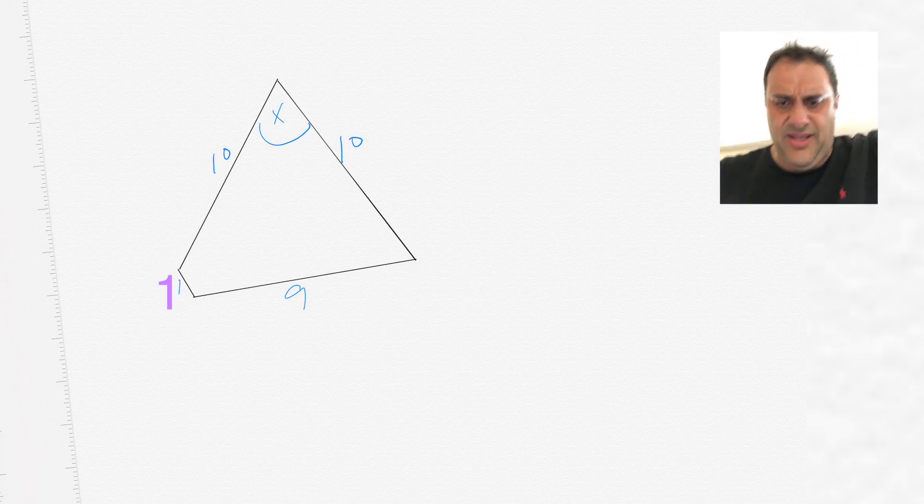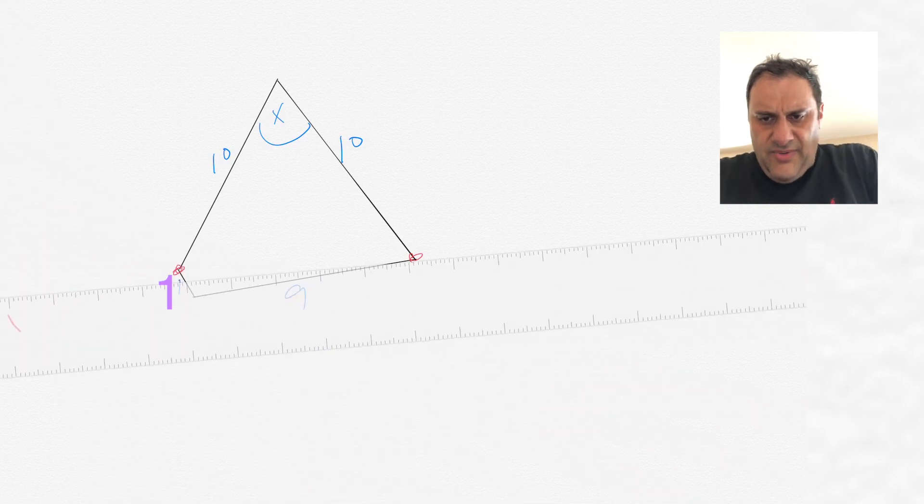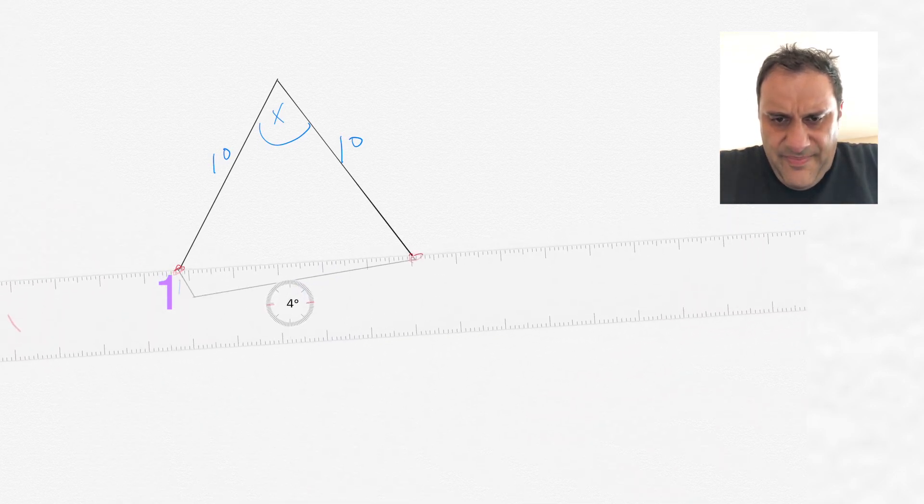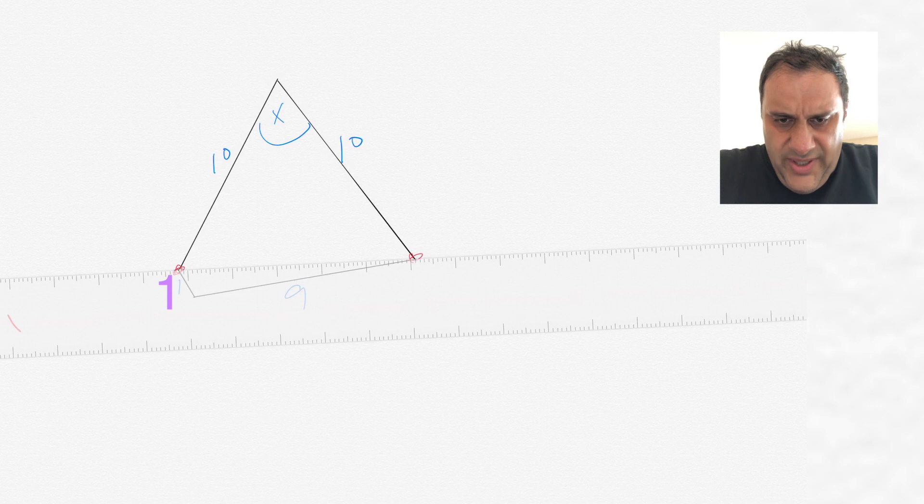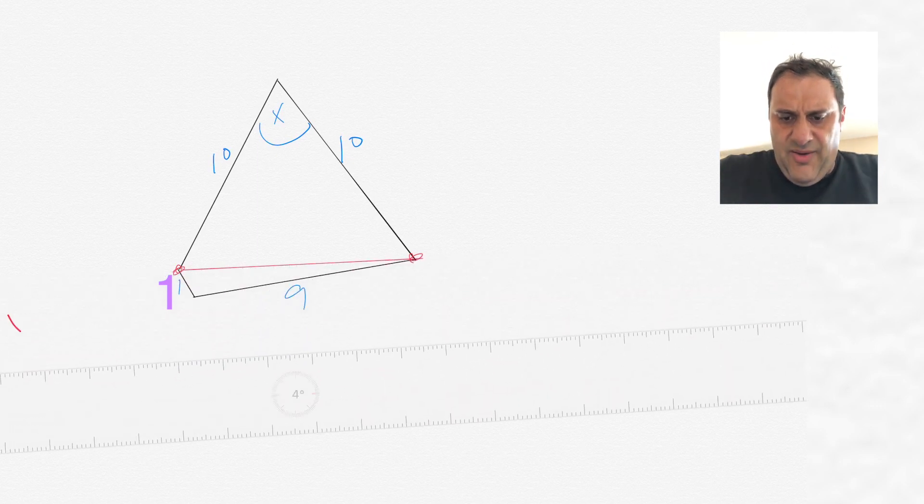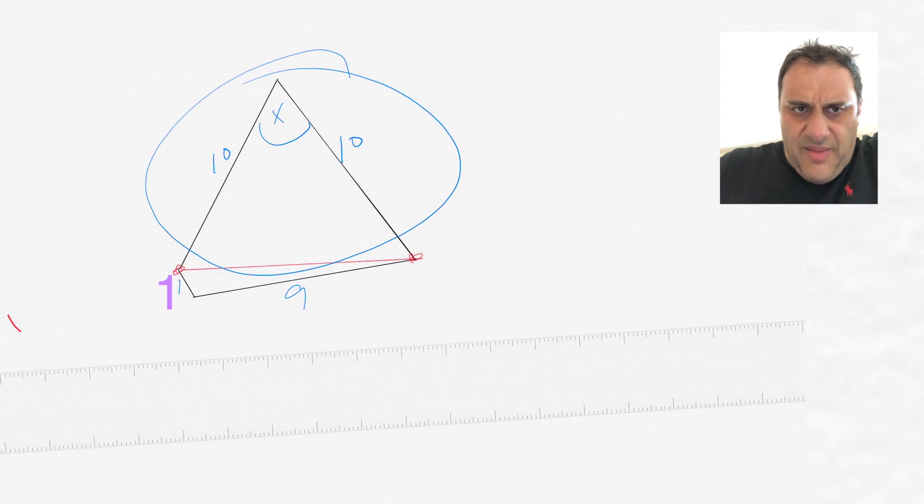The way I did it, I imagined this point and this point. If we draw a straight line from those two points, what we now have is two triangles. We have that triangle up top and then we have that triangle right there.